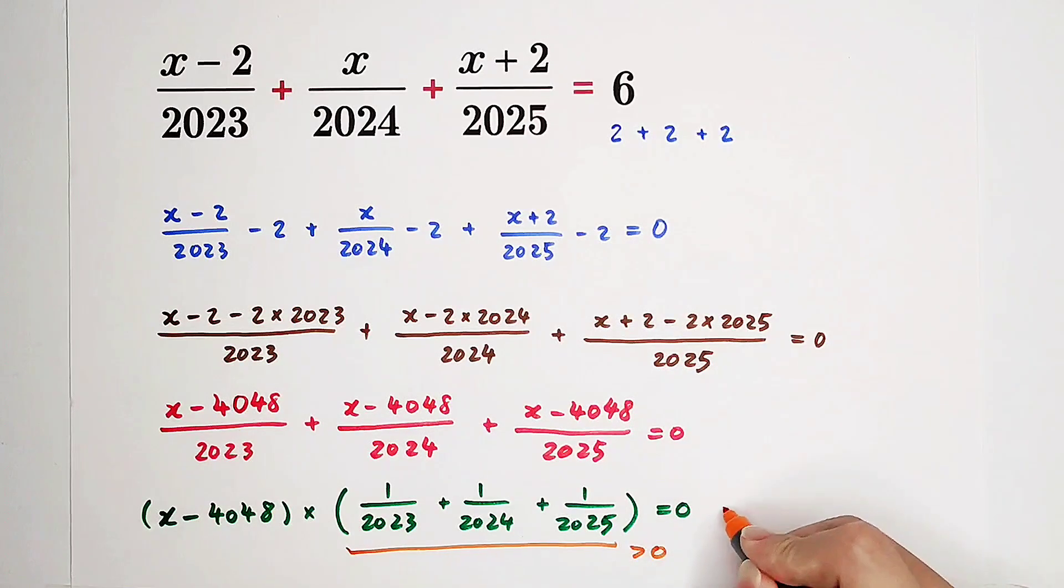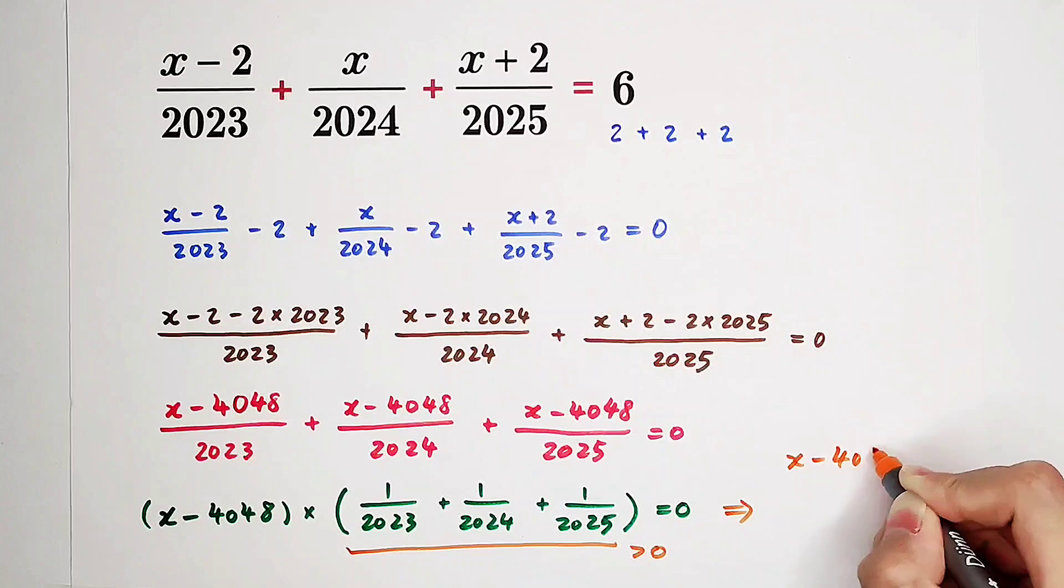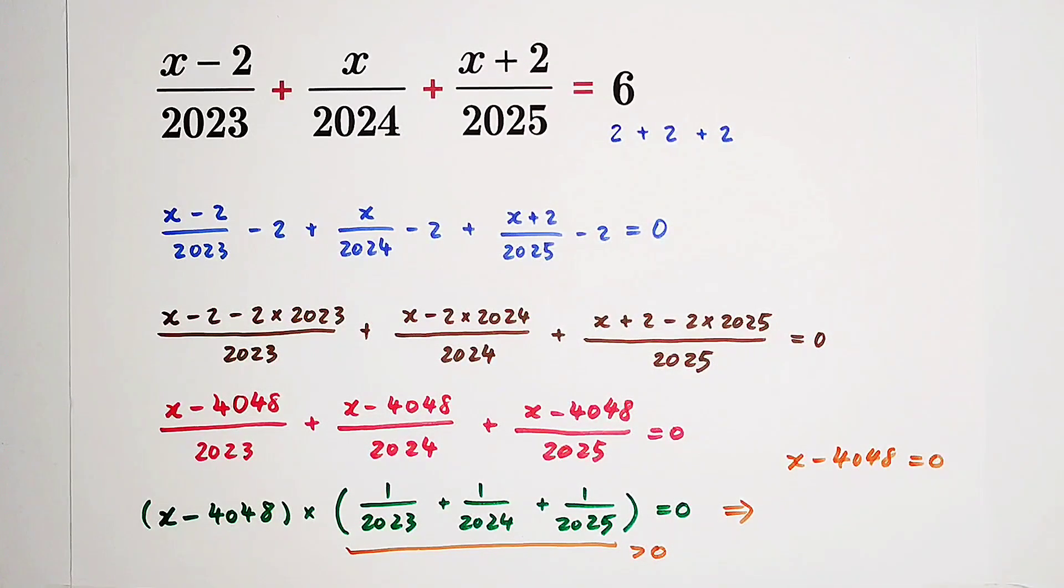So that means this implies X minus 4048 has to be zero, and X is just 4048.